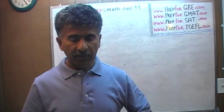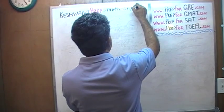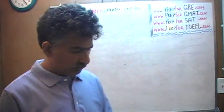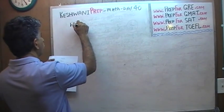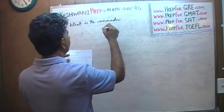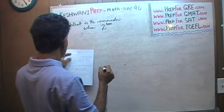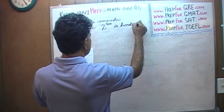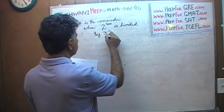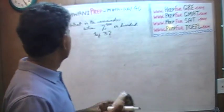We are here because we want to improve our math skills. Today is our day number 40. Math skills whether you are preparing for the GRE, GMAT, or SAT — it does not matter. The question for today is: what is the remainder when 2 raised to 100 is divided by 3?